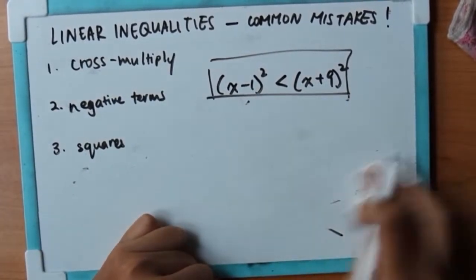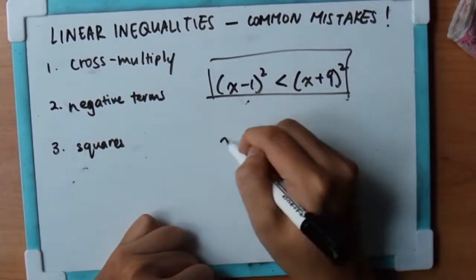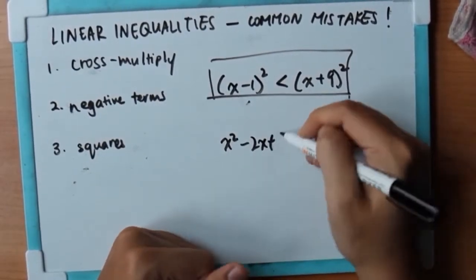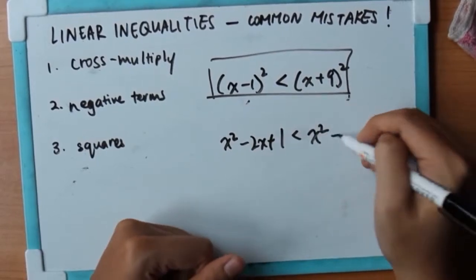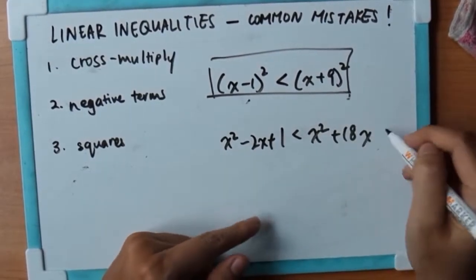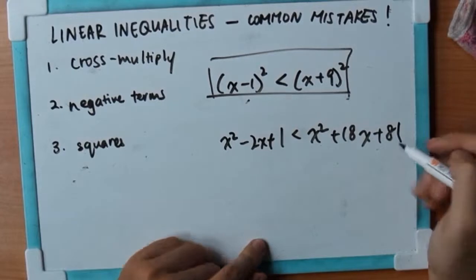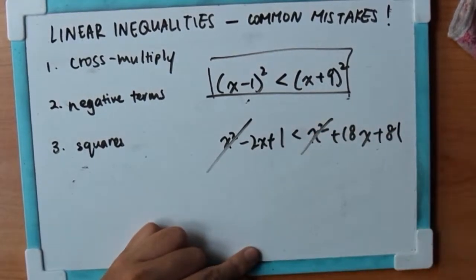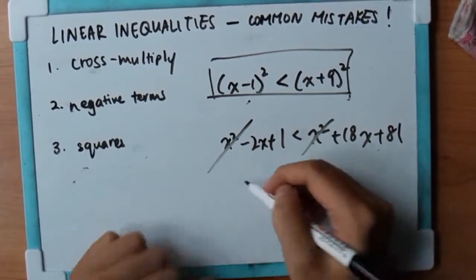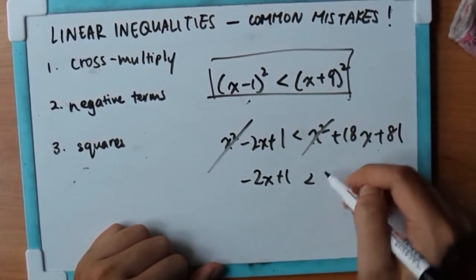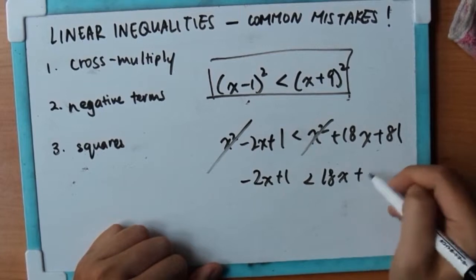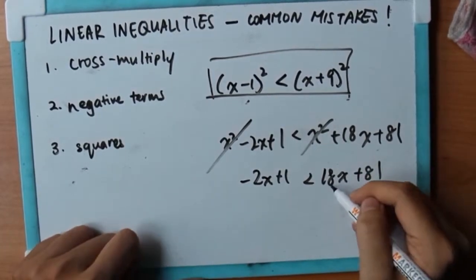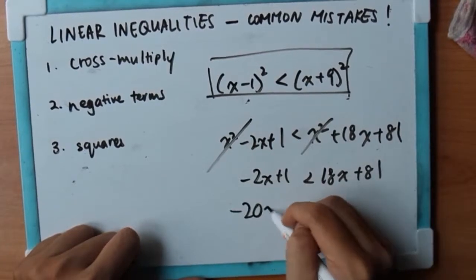So I'm just gonna show you very quickly. Because this is linear inequalities, so they will cancel out. If you take a maths, then you have to do quadratic inequalities. But for a maths, your x square should cancel out. So if it doesn't, then something is wrong. So you just solve this. I'll just make this quick for you.